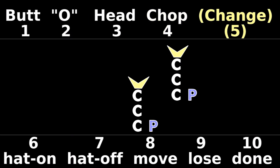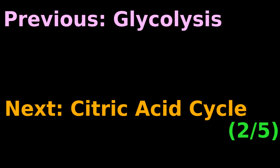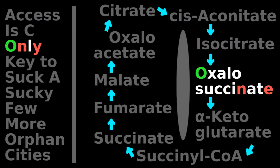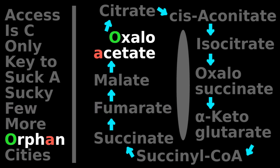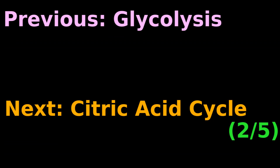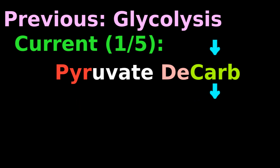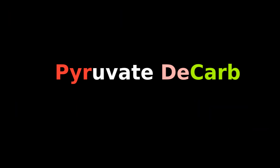Our previous biochemistry tutorial involved the glycolysis mnemonic. Our next tutorial provides a mnemonic for the citric acid cycle. The current tutorial discusses pyruvate decarboxylation and transitions between glycolysis and the citric acid cycle with this mnemonic.